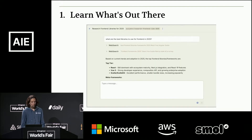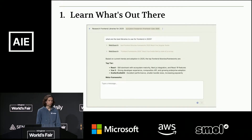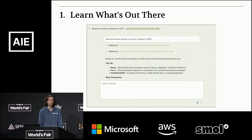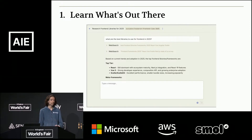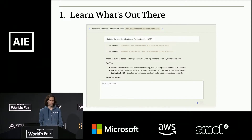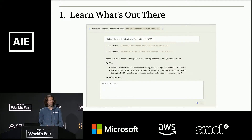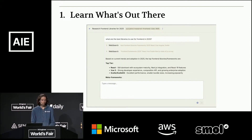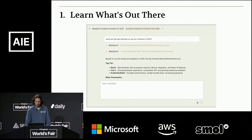The first thing you want to do when using coding agents to prevent problems is learn what's out there. We try to make this as easy as possible in Sculptor by letting you ask questions, have it do research, and get answers about what technologies exist and how other people have solved similar problems — so you don't end up reproducing work that's already out there.